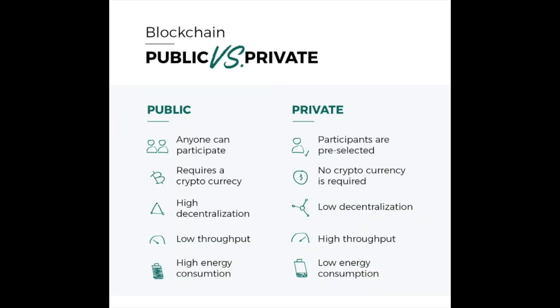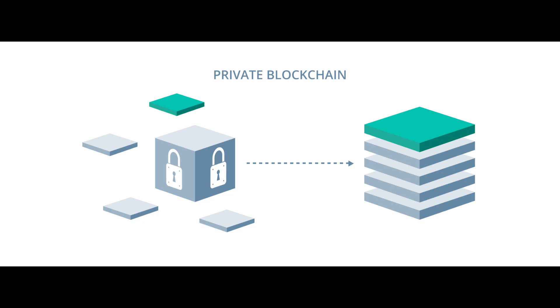On the flip side, the disadvantages of private blockchains include the controversial claim that they aren't true blockchains. It's also more difficult to fully achieve trust in the information since centralized nodes determine what is valid. You also cannot be anonymous on a private blockchain, and the source code is often unviewable, so it's hard for users to audit the actual technology underneath it.